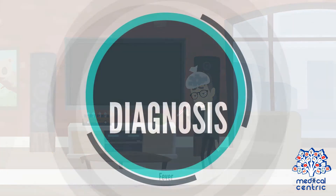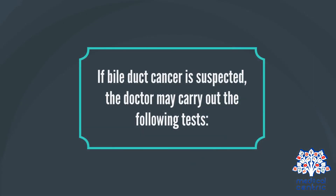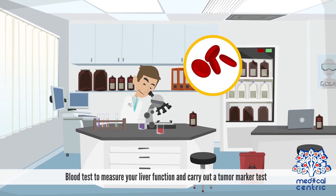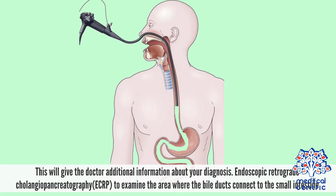If bile duct cancer is suspected, the doctor may carry out the following tests. A blood test to measure liver function and carry out a tumor marker test. The tumor marker test checks for the level of cancer antigen CA 19-9 in your blood, which will give the doctor additional information about your diagnosis.